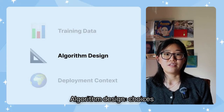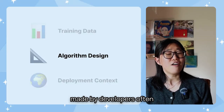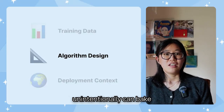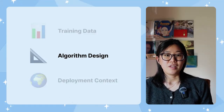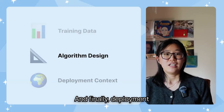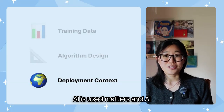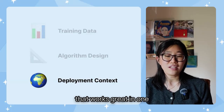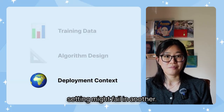Second, algorithm design: choices made by developers, often unintentionally, can bake in certain perspectives. And finally, deployment context: how and where AI is used matters, and AI that works great in one setting might fail in another.